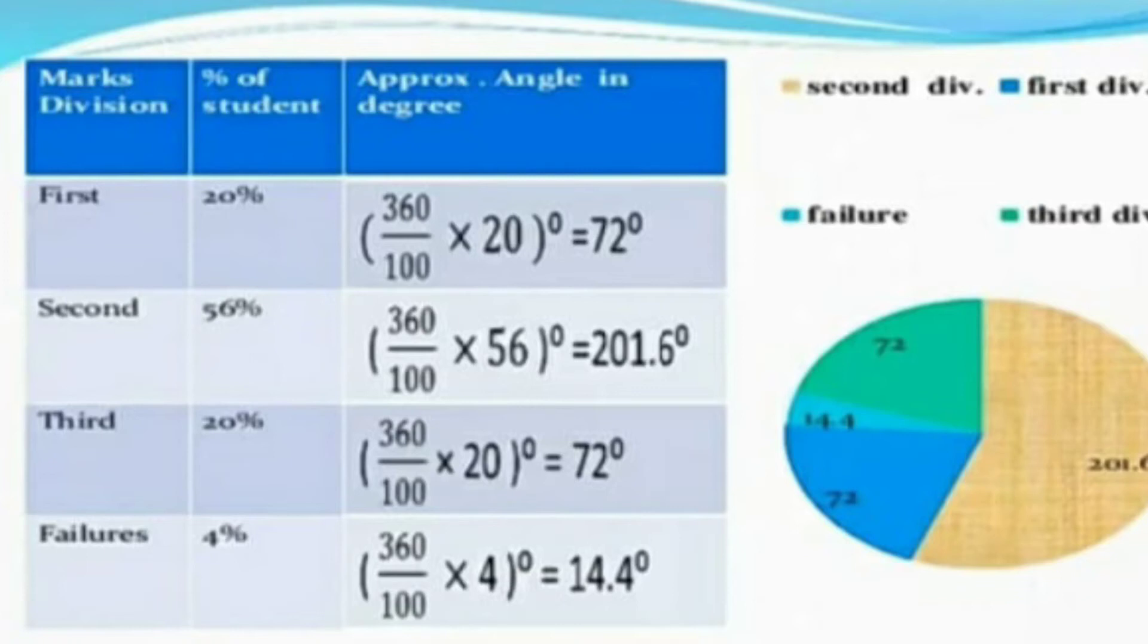Second class 56%, so 360 divided by 100 into 56 equals 201.6 degree angle. Third class again 20 percentage, 360 divided by 100 into 20 gives 72 degrees. And failures 4 percentage, 360 divided by 100 into 4 equals 14.4 degrees.